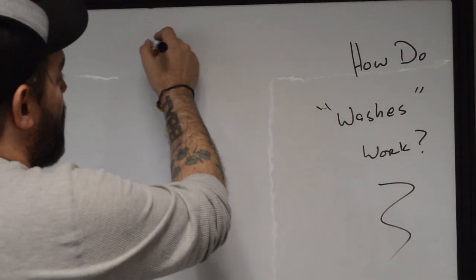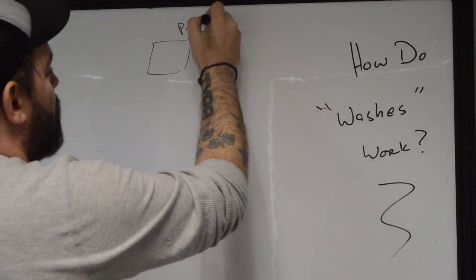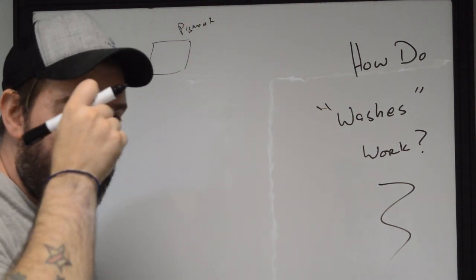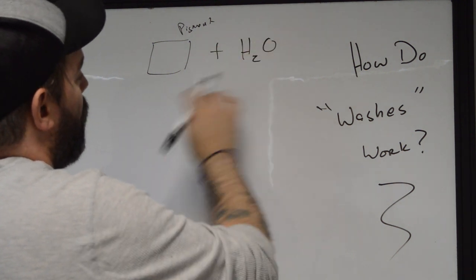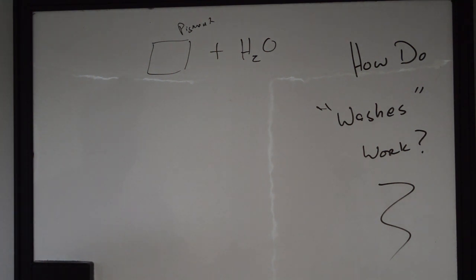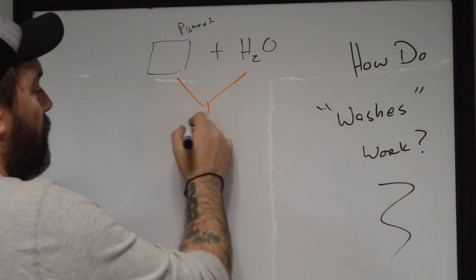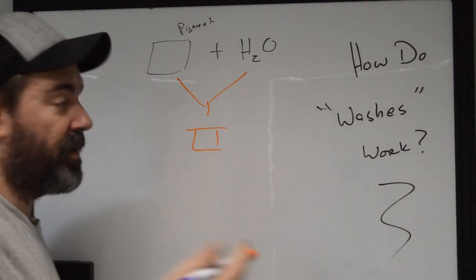Washes are... You take a raw pigment mix. This would be your bottled pigment that you've got, whatever brand. I don't care. And then what you do is you add water. And what happens to it? You take both of these things and you funnel them down into an ink cap.